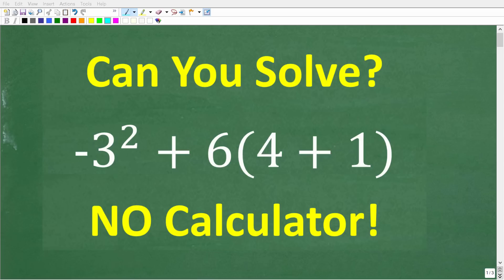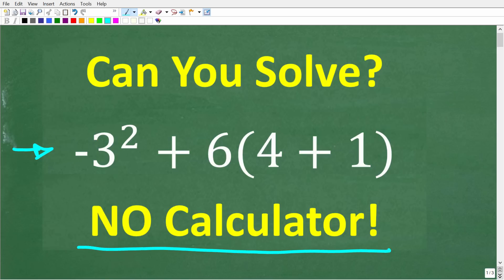If you're pretty good at basic math, this will be a very easy problem to solve without using a calculator. Let's take a look at the question: we have negative 3 squared plus 6 times the quantity 4 plus 1 in parentheses.